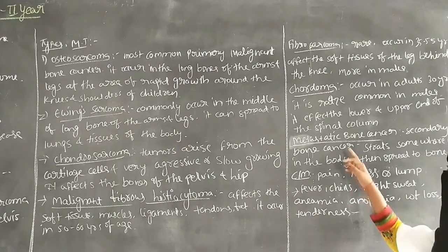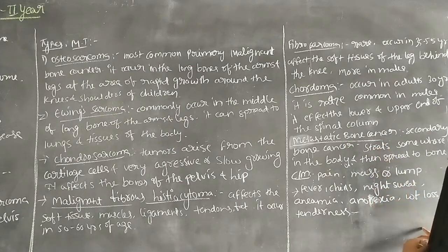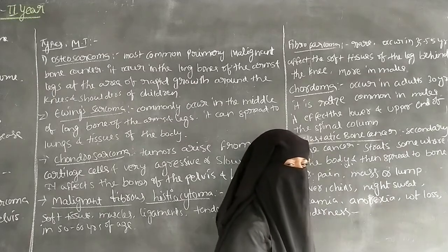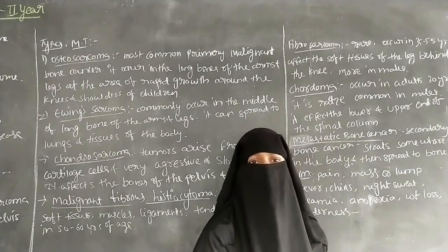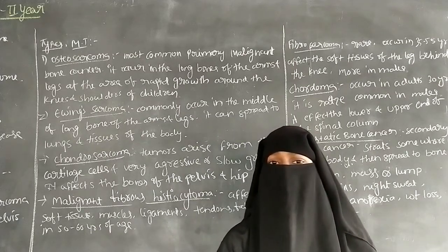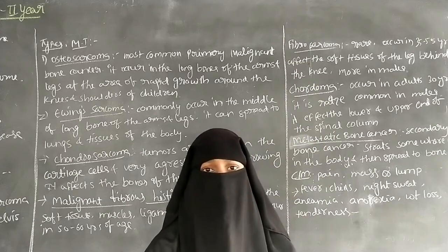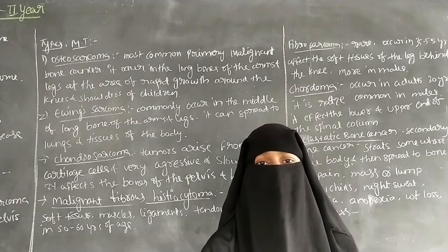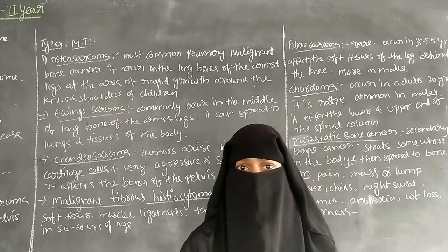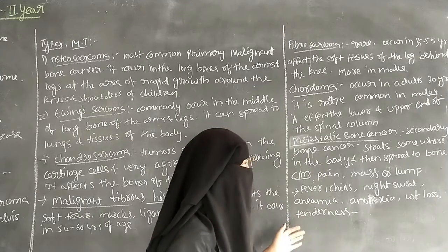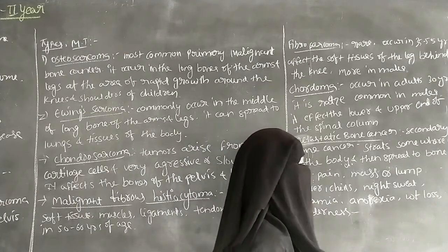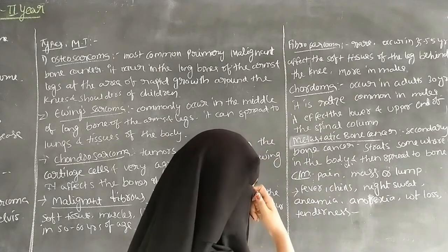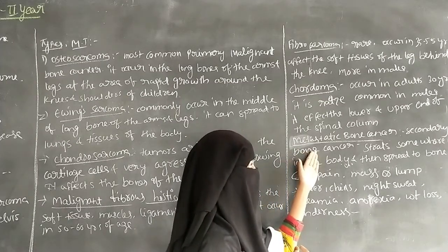The next type is metastatic bone cancer, also called secondary bone cancer. This is when cancer present anywhere else in the body spreads to the bone. For example, if a patient has lung cancer, it can spread to the bones.